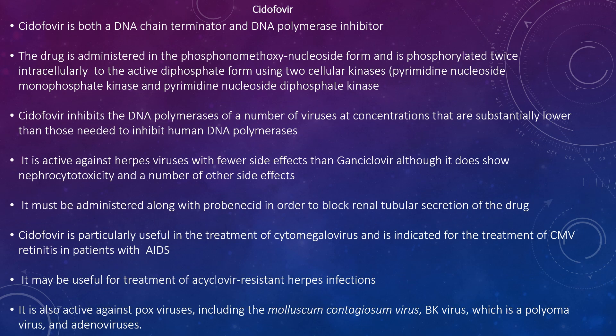Cidofovir (HPMPC) is a DNA chain terminator and DNA polymerase inhibitor; this drug is administered as the phosphonate nucleoside form, which is phosphorylated twice in the cell to the active diphosphate form using two cellular kinases — pyrimidine nucleoside monophosphate kinase and pyrimidine nucleoside diphosphate kinase. This inhibits the DNA polymerases of a number of viruses at concentrations substantially lower than those needed to inhibit cellular DNA polymerases. It is active against herpesviruses with fewer side effects than ganciclovir, although it does show nephrotoxicity. It has to be administered with probenecid to block renal tubular secretion of the drug. It is useful in the treatment of cytomegalovirus retinitis in AIDS patients, and also for CMV-resistant herpesvirus infections, as well as being active against pox viruses including molluscum contagiosum virus, BK virus/polyoma virus, and adenoviruses.